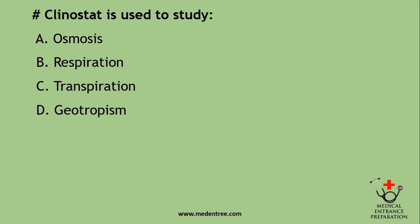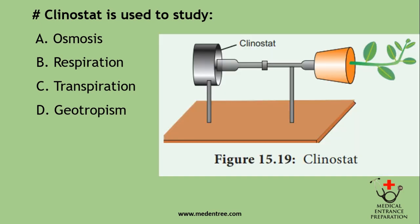Clinostat is used to study: osmosis, respiration, transpiration, or geotropism? A clinostat is a device on which potted plants are placed and rotated continuously and slowly so that the effect of gravity is nullified. When the clinostat is stopped for a considerable amount of time, the plant grows away from gravity, showing negative geotropism. So the clinostat is used to study geotropism.